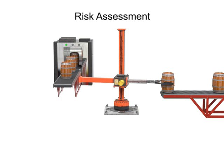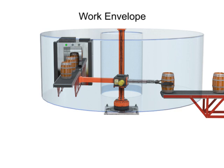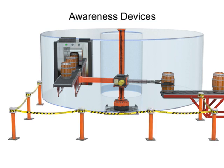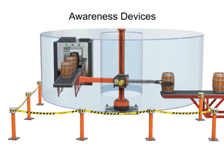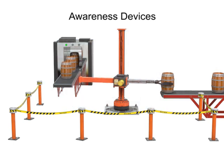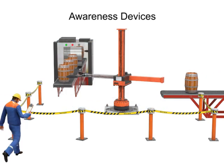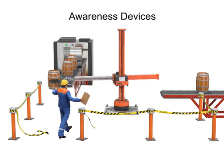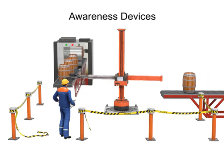Several methods can be used to protect the work envelope. The simplest are known as awareness devices. These devices are only intended to define the work envelope and make personnel aware of the hazards. They do not prevent access and usually consist of small fences or roped-off areas.